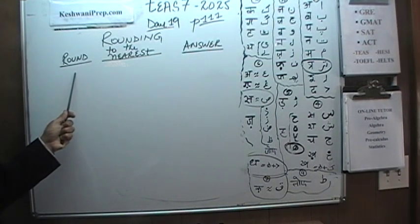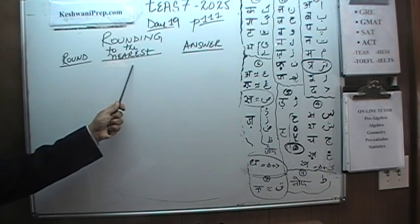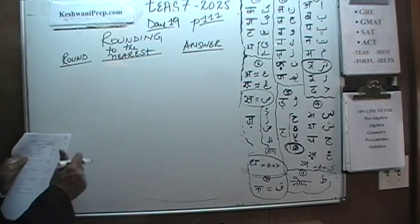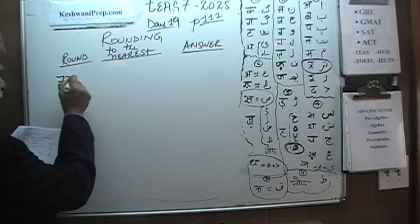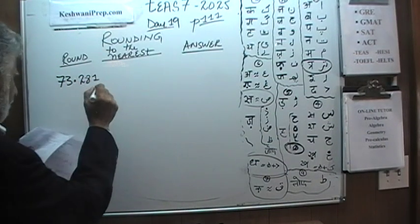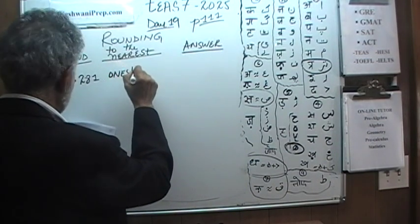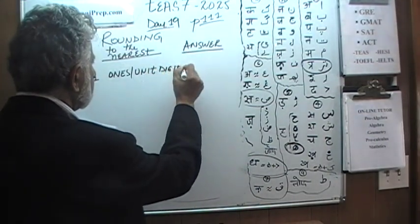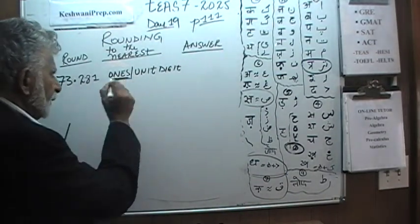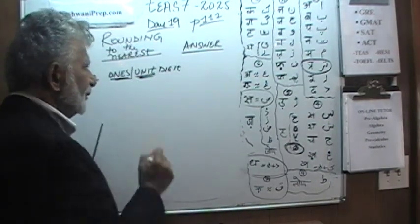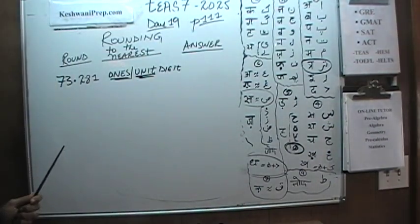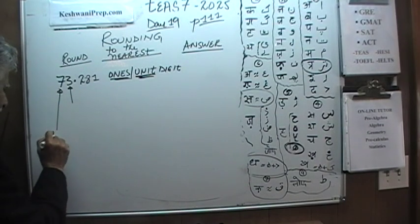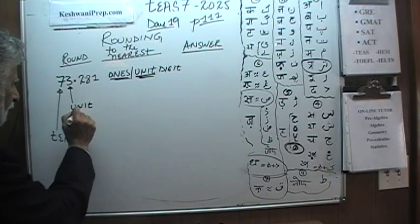In the first column, we will be given the quantity that we are supposed to round. In the second column, we will be told we have to round to the nearest which place. The first number is 73.281 and we are told to round it to the nearest ones or unit digit. Some people call it ones digit, some people call it unit digit — it is the same thing.